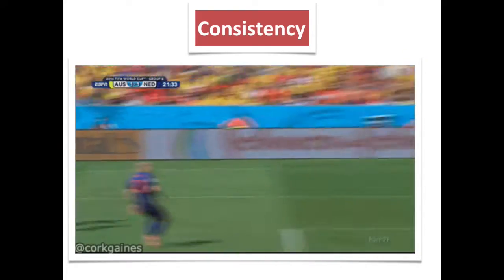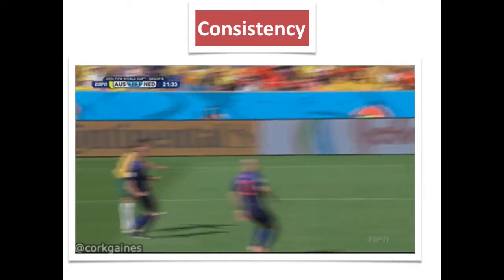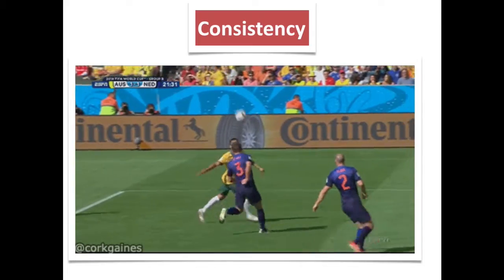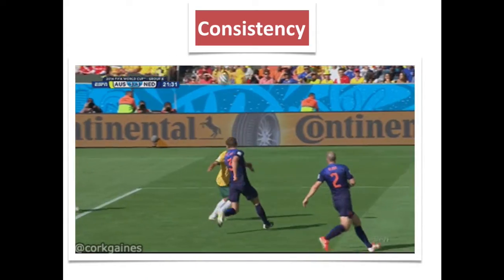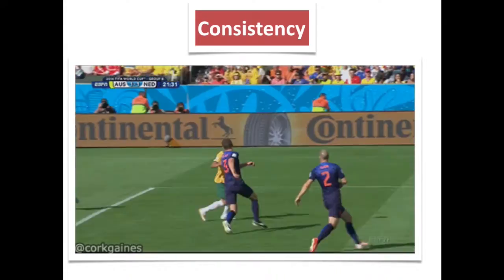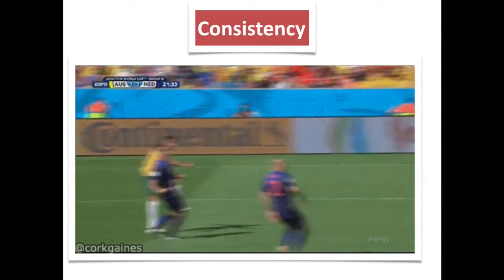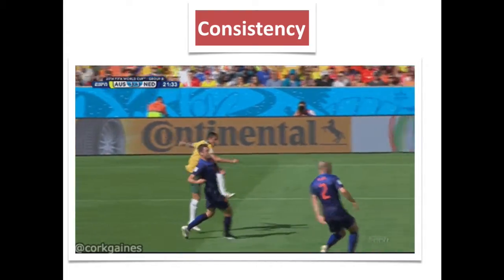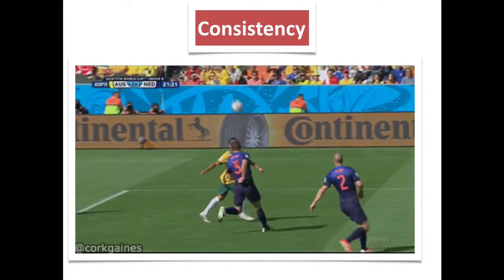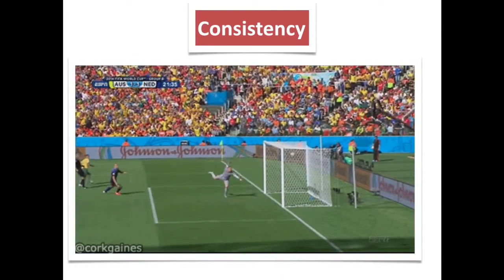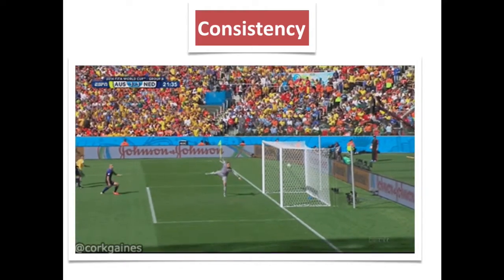In soccer, consistency is also important. Tim Cale is a fantastic soccer player who plays for the Socceroos, and he's able to regularly put the ball into the net and score goals. His consistency comes through training and experience, as well as his capacity to anticipate where the ball is going to land. He's also able to use his kinesthetic sense to contact the ball in the correct spot, apply the correct amount of force, and make adjustments to his technique as he's playing.